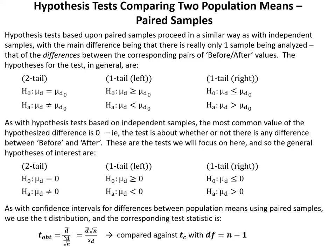As with confidence intervals for differences between population means using paired samples, we use the t-distribution. The corresponding test statistic is: t obtained equals D-bar over SD over the square root of n, which equals D-bar times the square root of n over SD. We compare that t obtained against the critical value TC, with degrees of freedom equaling simply n minus 1, because there is just one sample of differences.